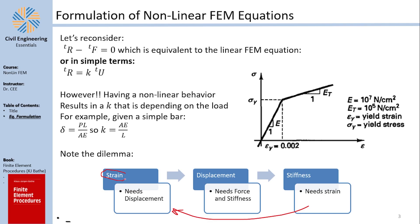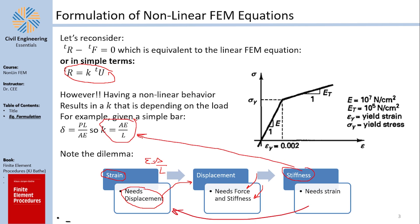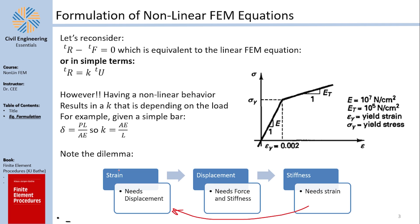To find the strain inside an element you need its displacements, since strain equals displacement over original length. To find displacement you need to solve the equilibrium equation, which requires the stiffness K. But K includes the elastic modulus, which depends on the strain — the very thing you were trying to find. This is a cyclic dependency.